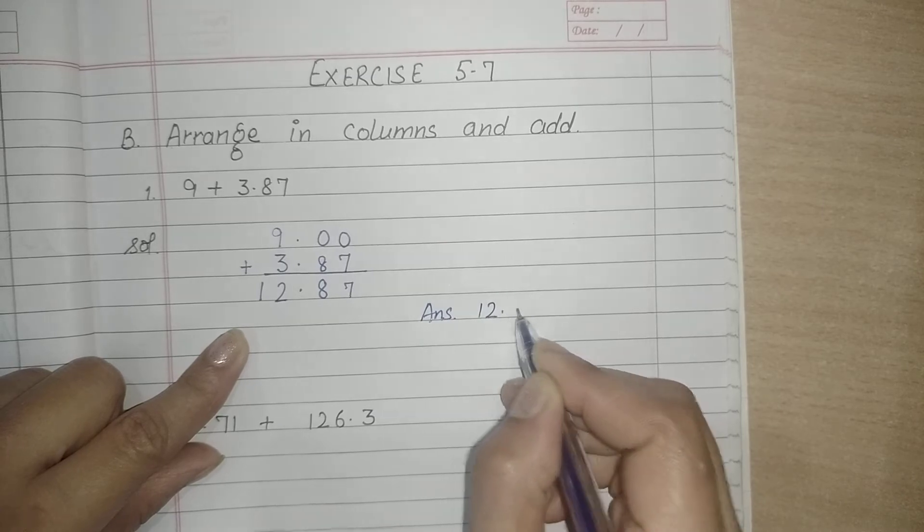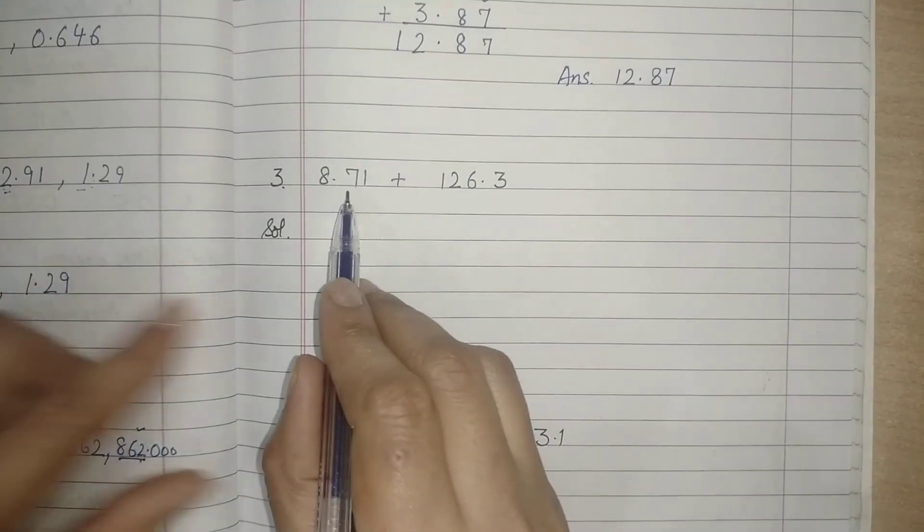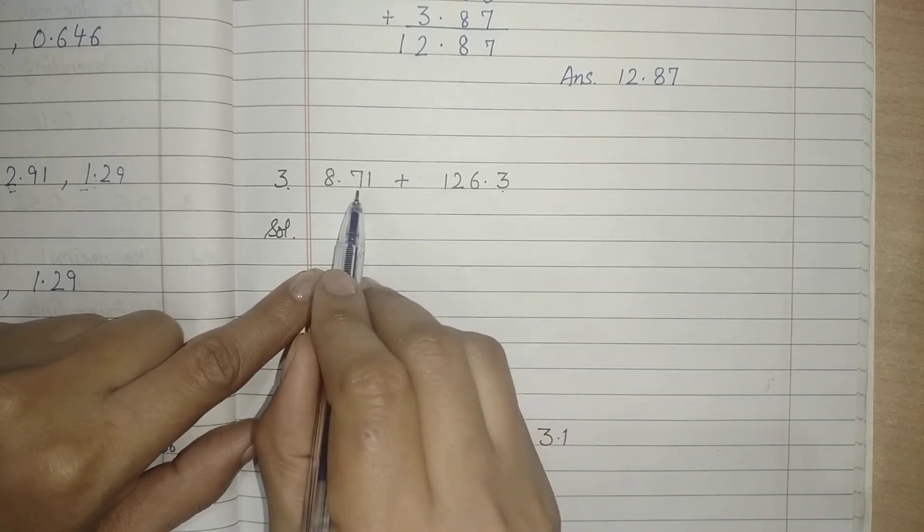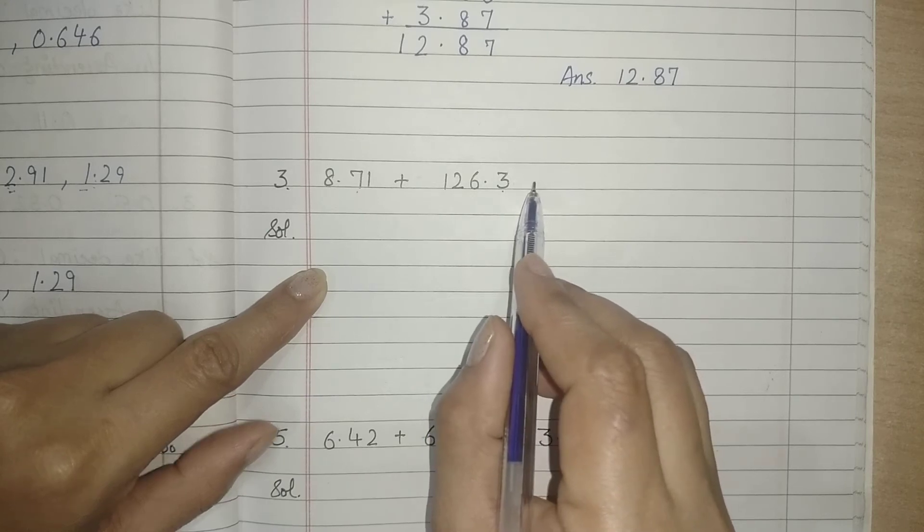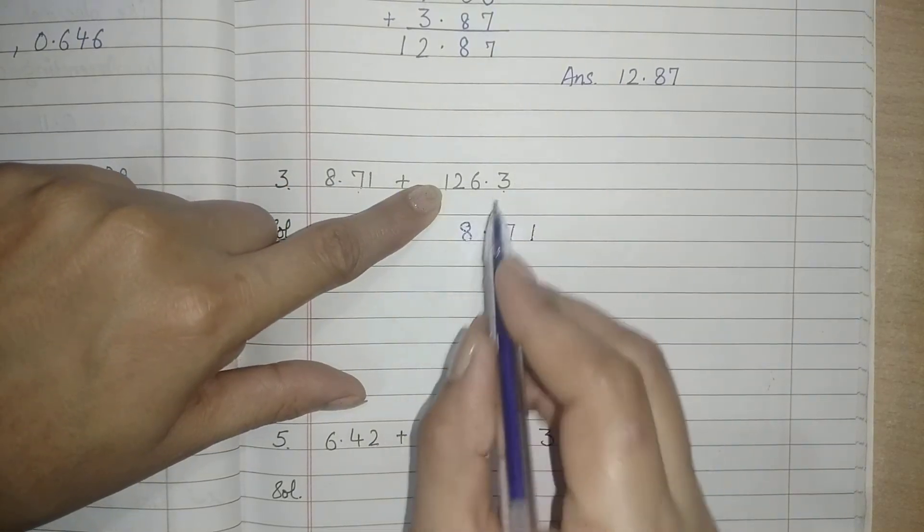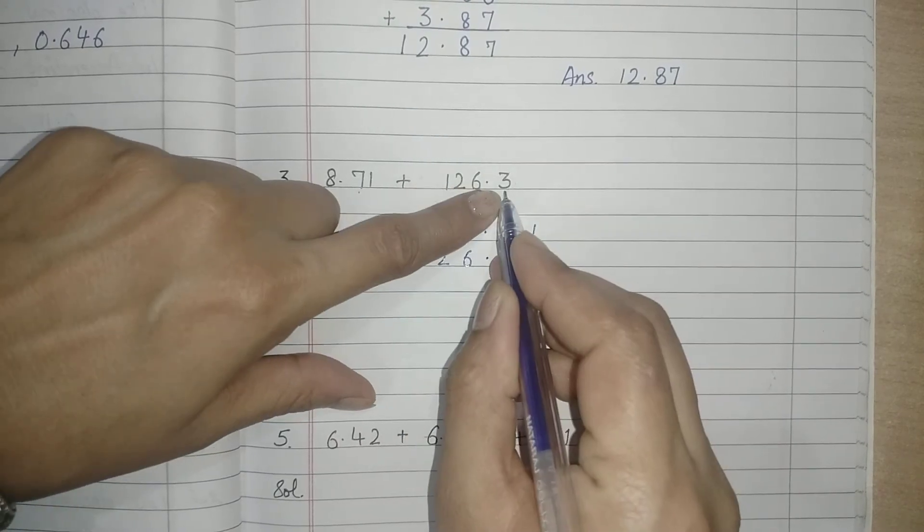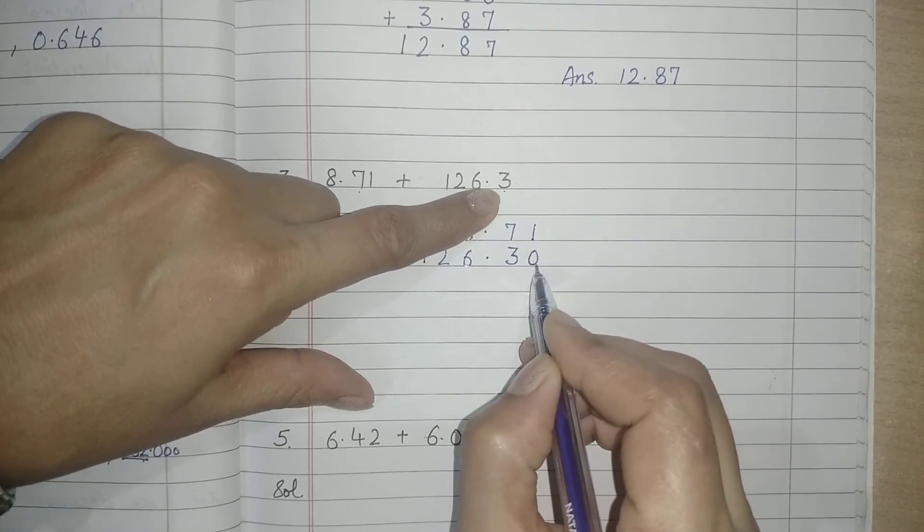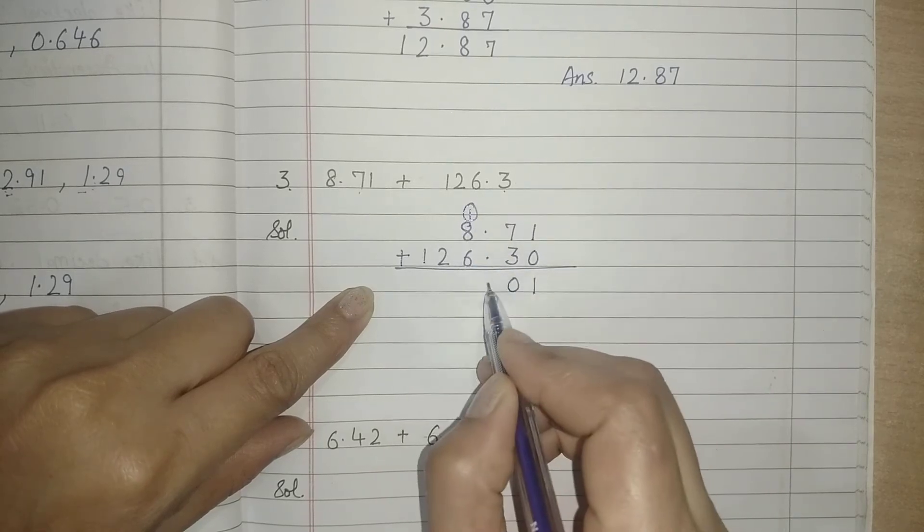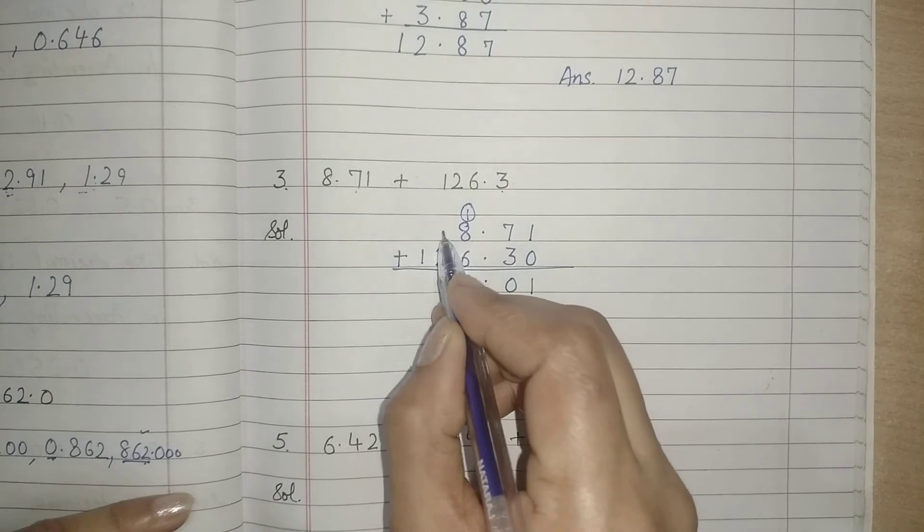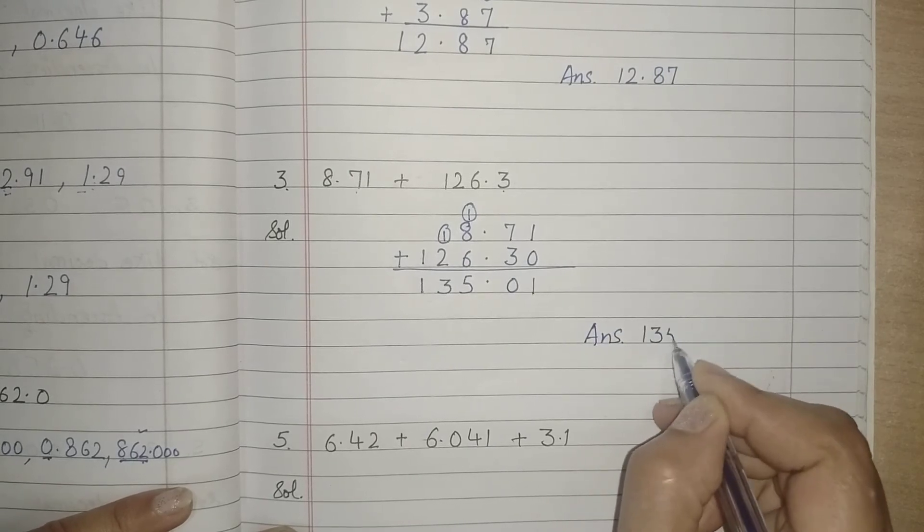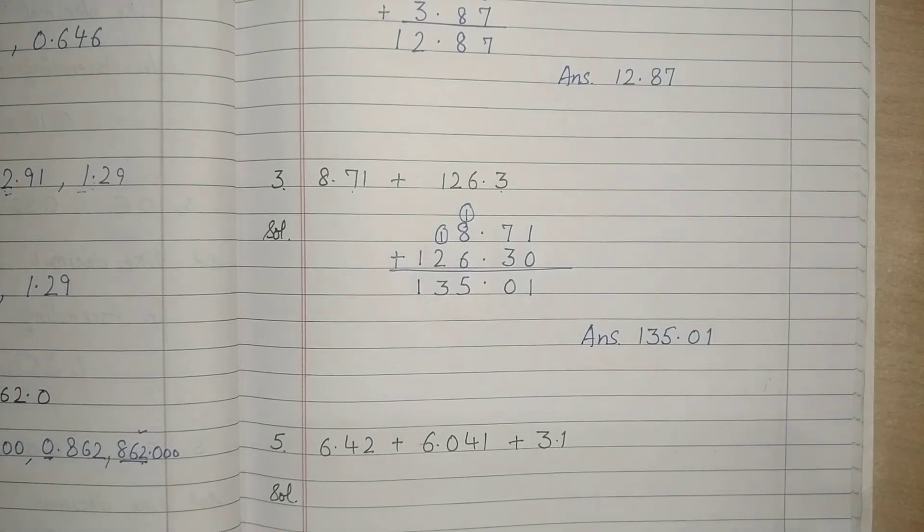Next part: 8.71 plus 126.3. Here the decimal places are two, so we will add 0 to make it like decimals. Let us write first in columns: 8.71 and this is 126.3, so we will add 0. Now add it: 1 plus 0 is 1, 7 plus 3 is 10, then 1 carry over, 1 plus 8 is 9, point, 1 plus 2 is 3, and then it is 1. So the answer is 135.01. I hope it is clear. Now let us see the next part.